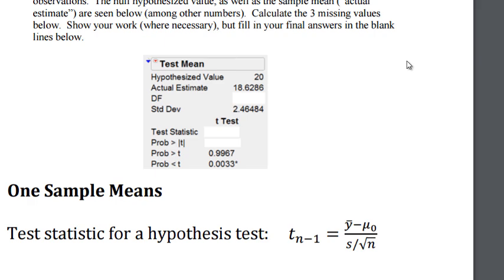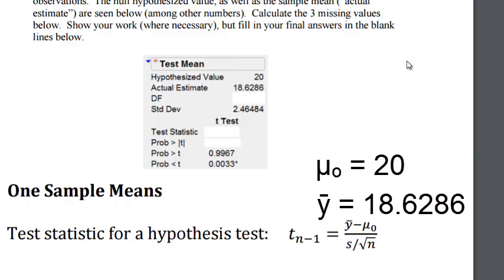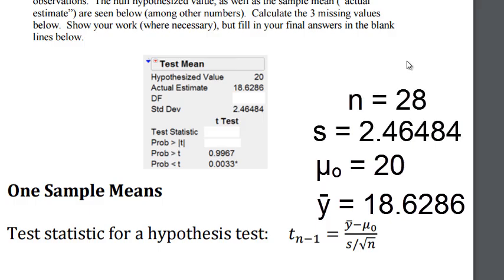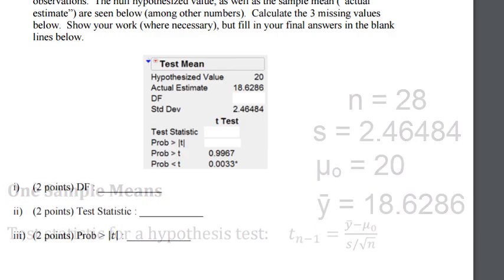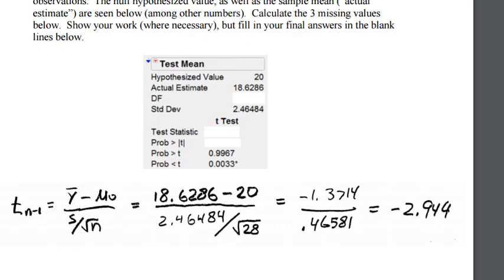Now with the formula right here we need to use our sample mean minus our hypothesized mean over the standard deviation divided by the square root of n. And always make sure to do these carefully. A lot of math errors happen right here but just work carefully and you should get the result of negative 2.944.